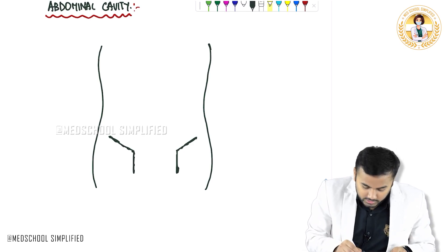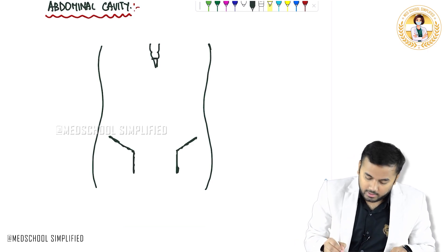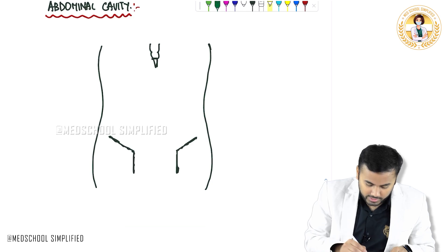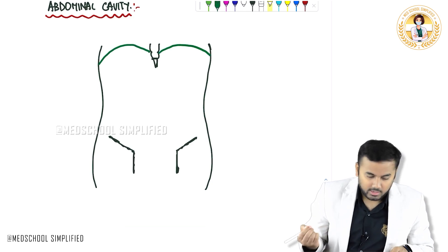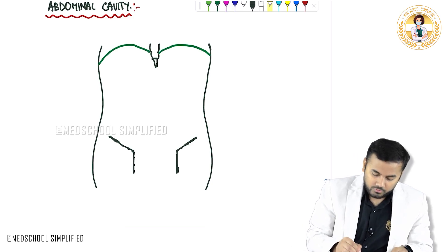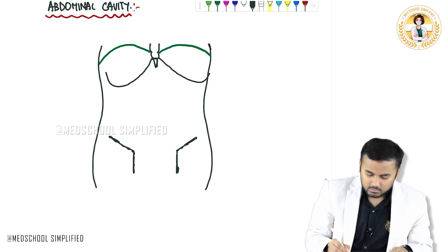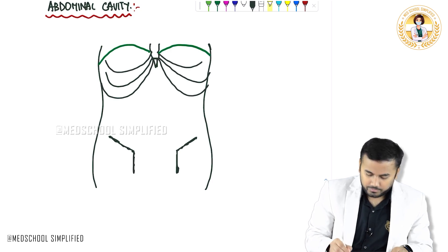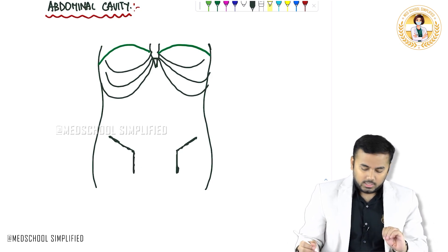Next important thing is that here you have got your sternum all the way like this. And after the sternum, you also have got the diaphragm — right hemidiaphragm and left hemidiaphragm. And you have got your ribs all the way down. These are your ribs.